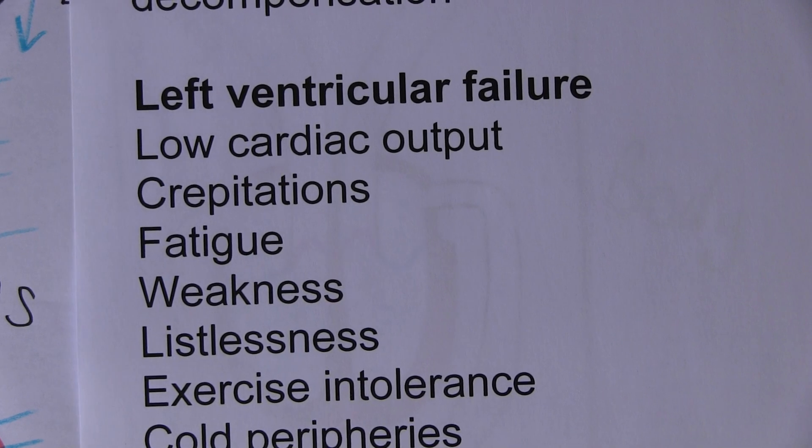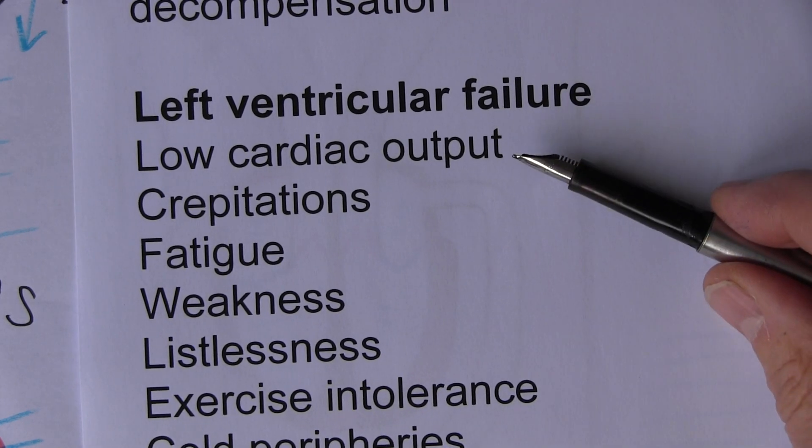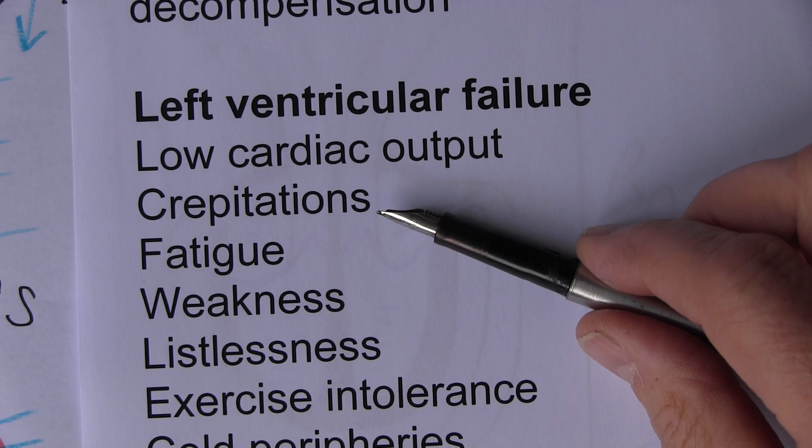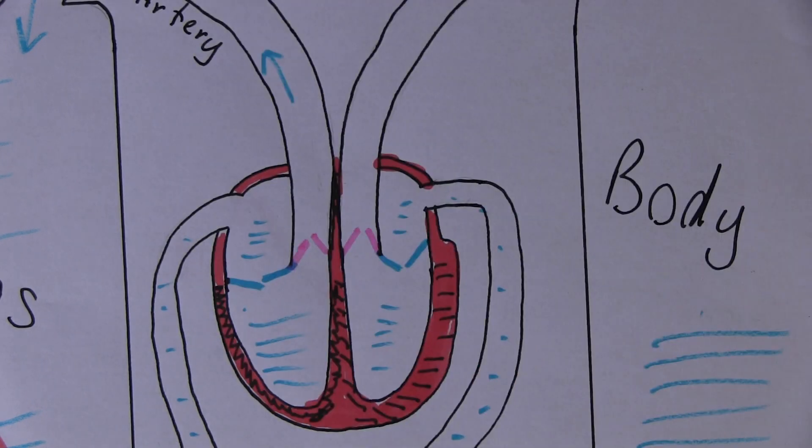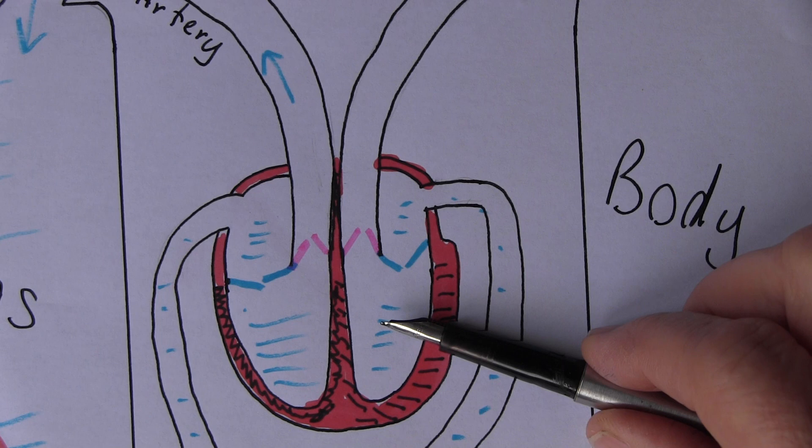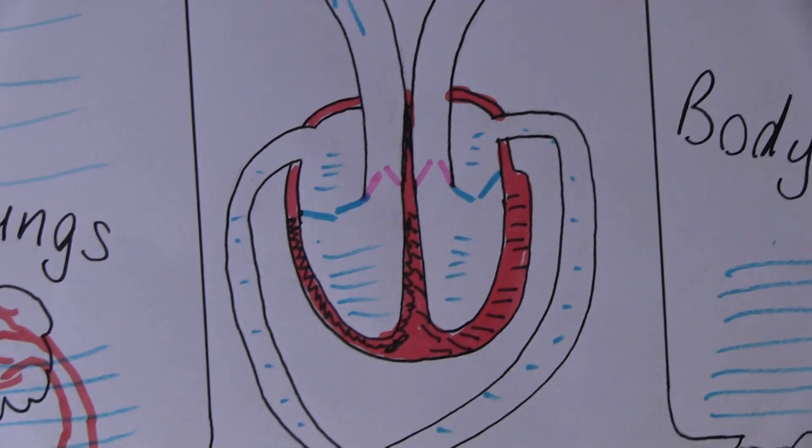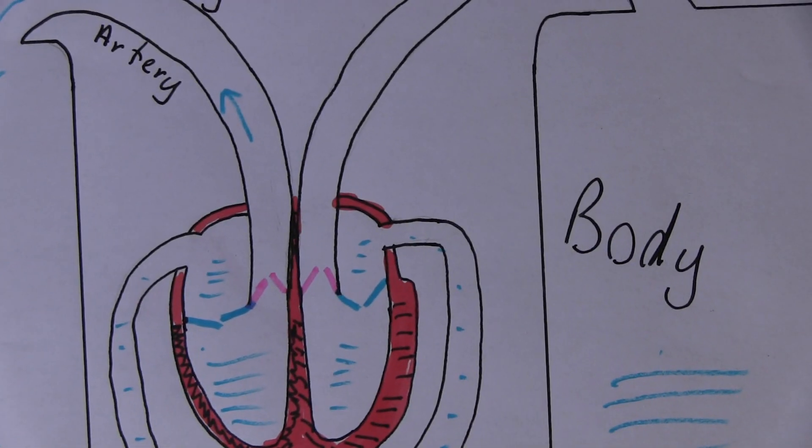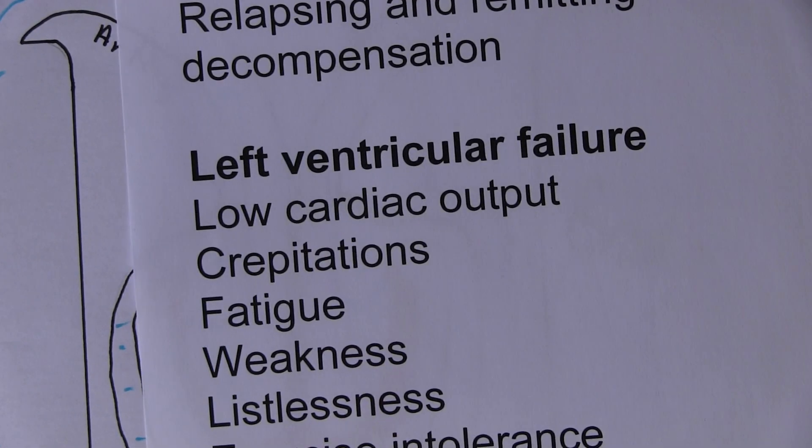The low cardiac output causes crepitations because it means there's damming back of blood from the left ventricle to the left atrium through the pulmonary veins into the lungs.